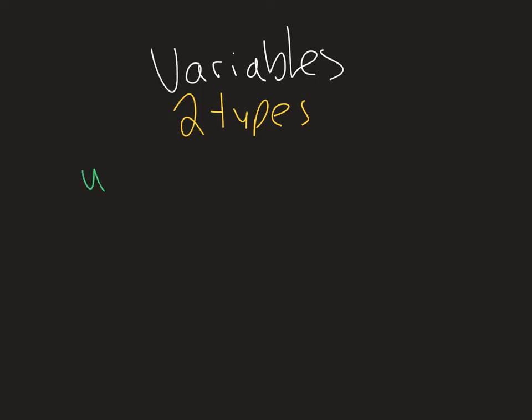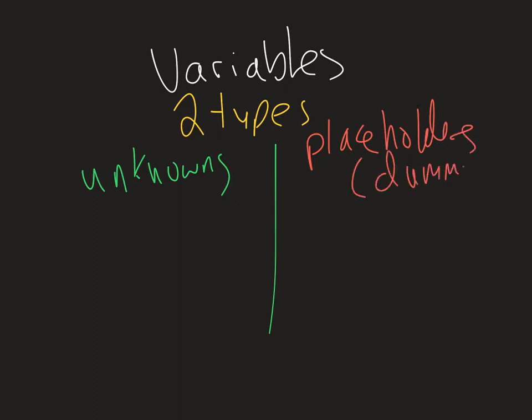There are unknowns. And there are placeholders. Sometimes referred to as dummy variables. So these serve two different roles. Unknowns, usually we can solve for. For example, x plus 7 equals 12. Well, we could solve for x. It stands for a particular value or maybe a couple values. But usually we're using this type of variable to solve for something.